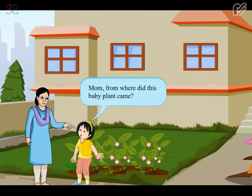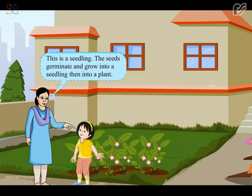Mom, from where did this baby plant come? This is a seedling. The seeds germinate and grow into a seedling, then into a plant.